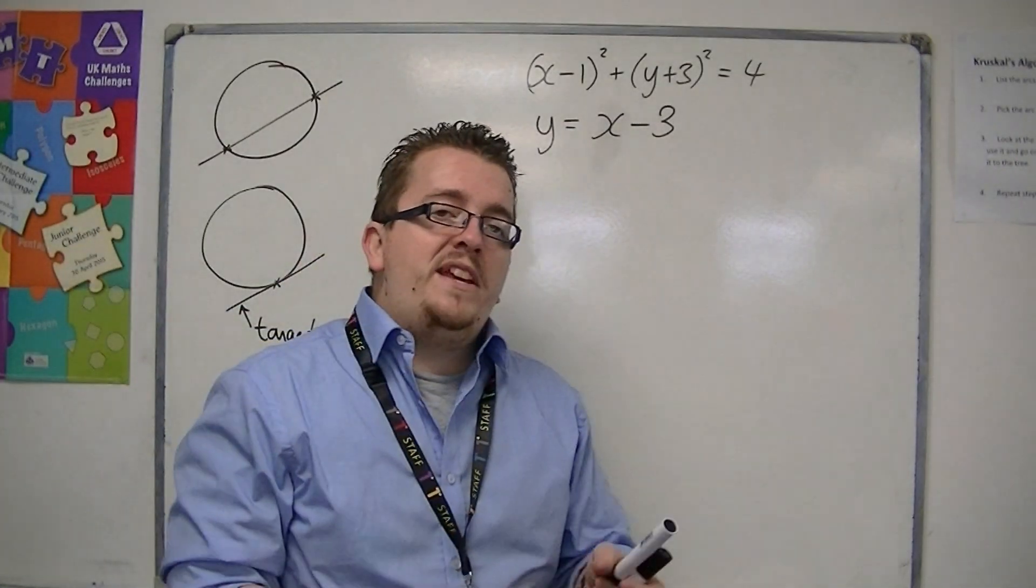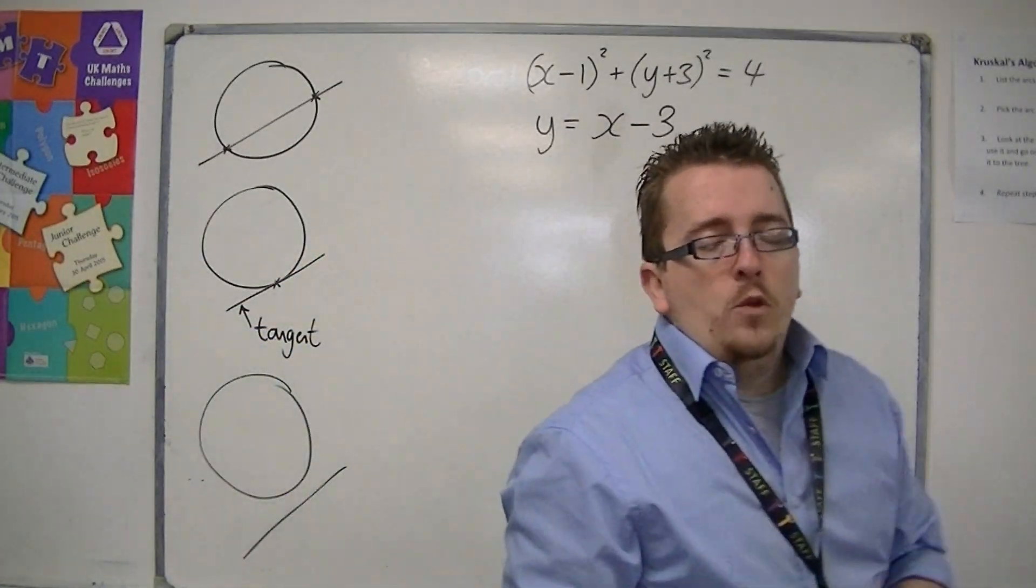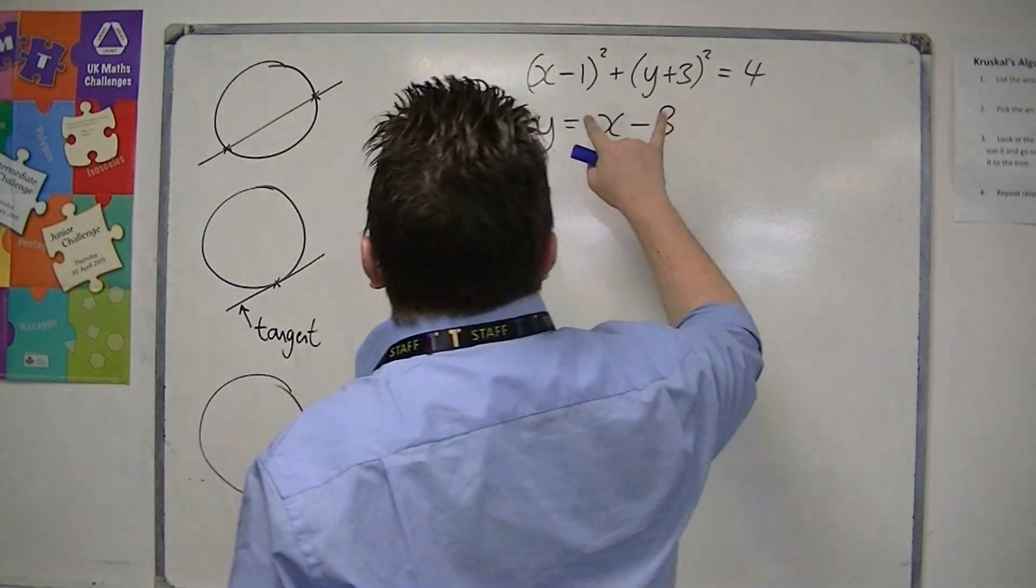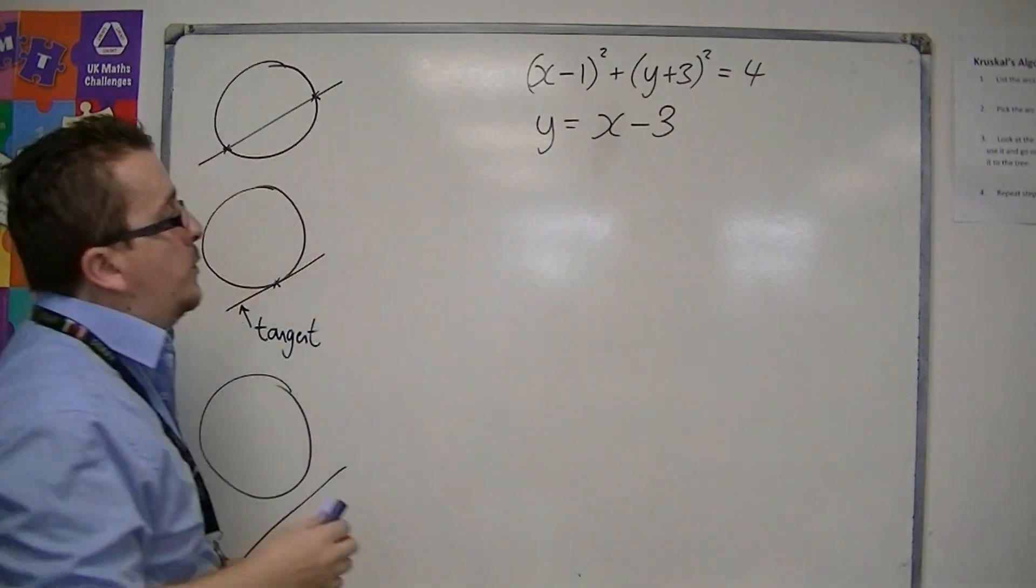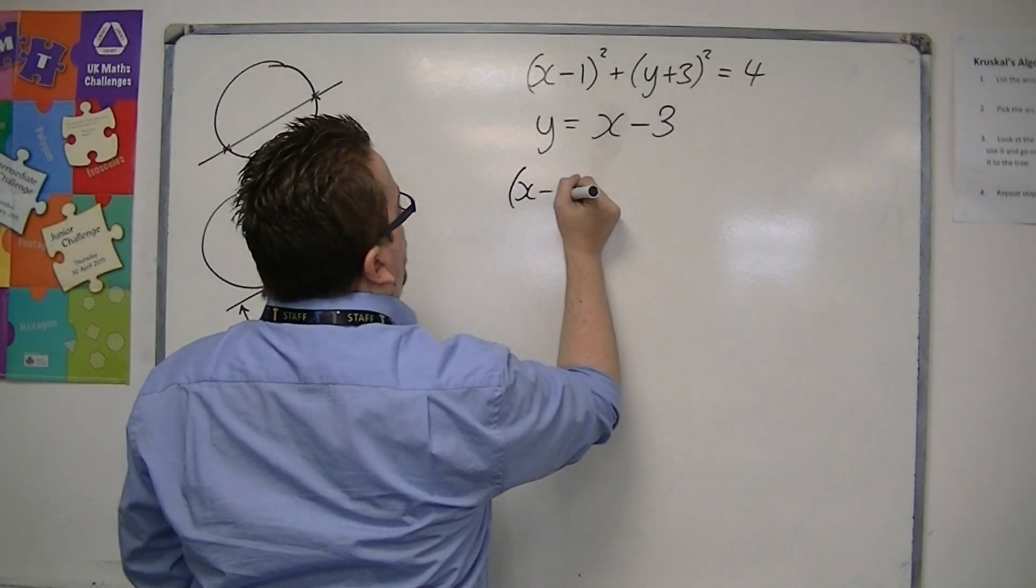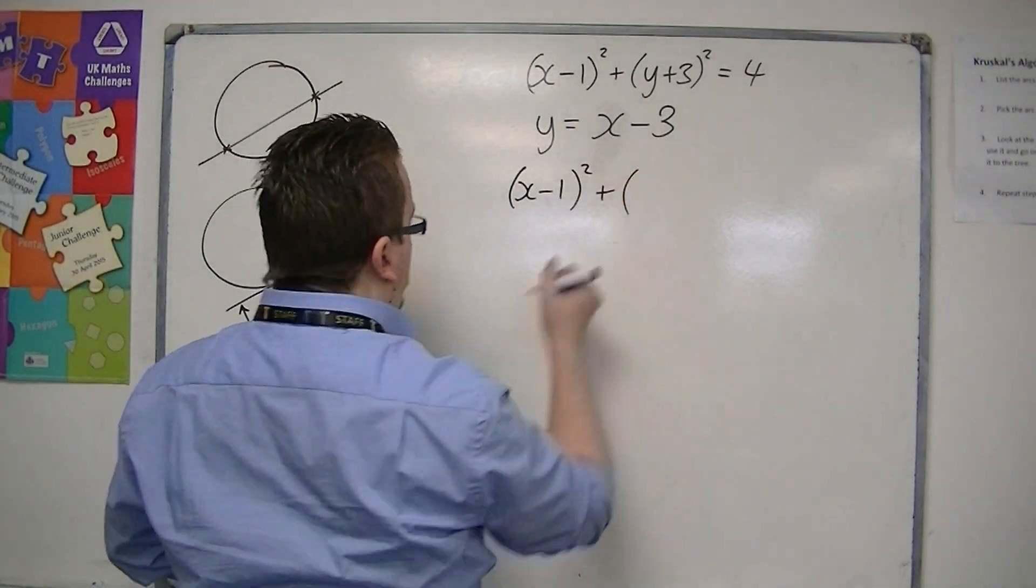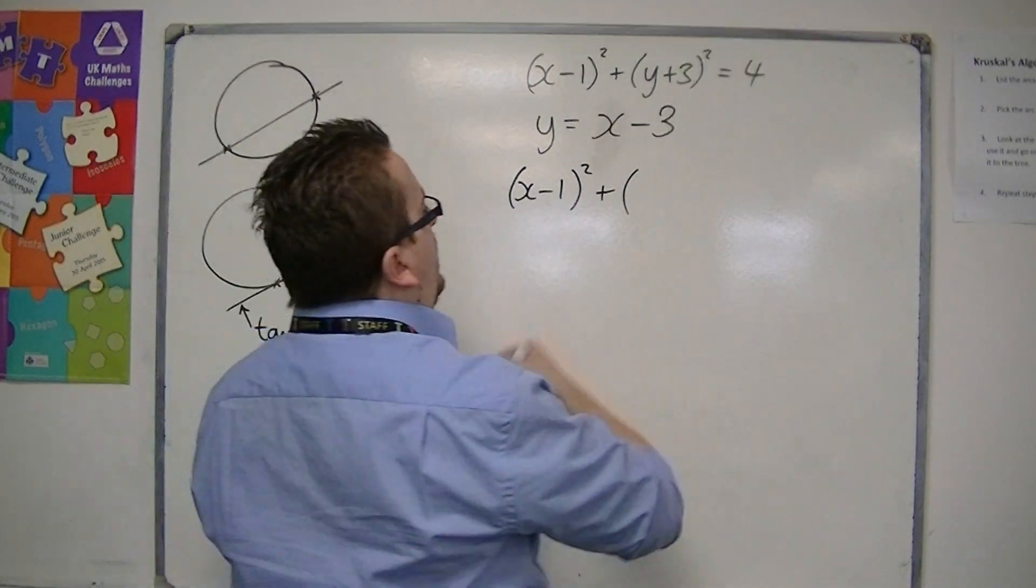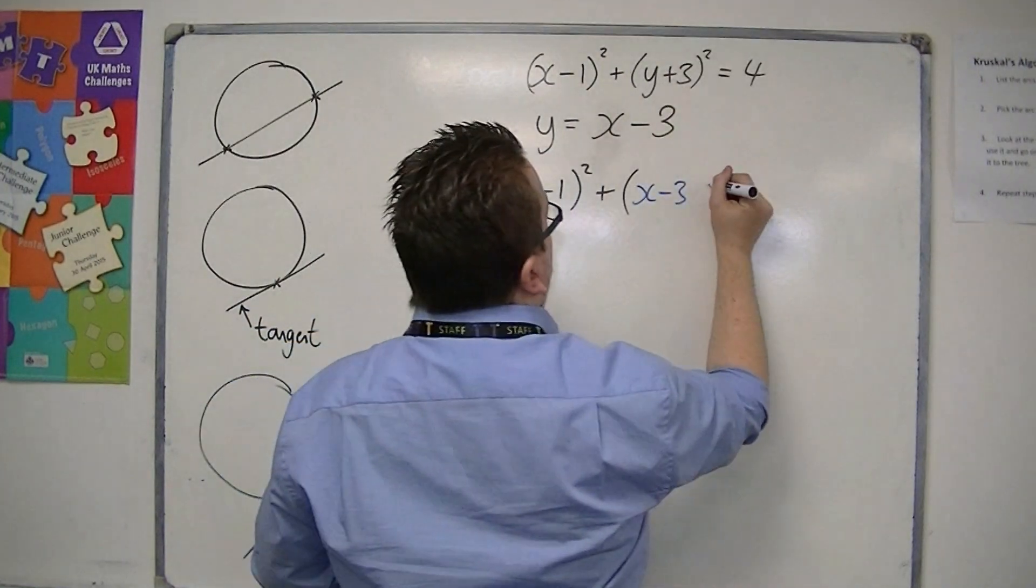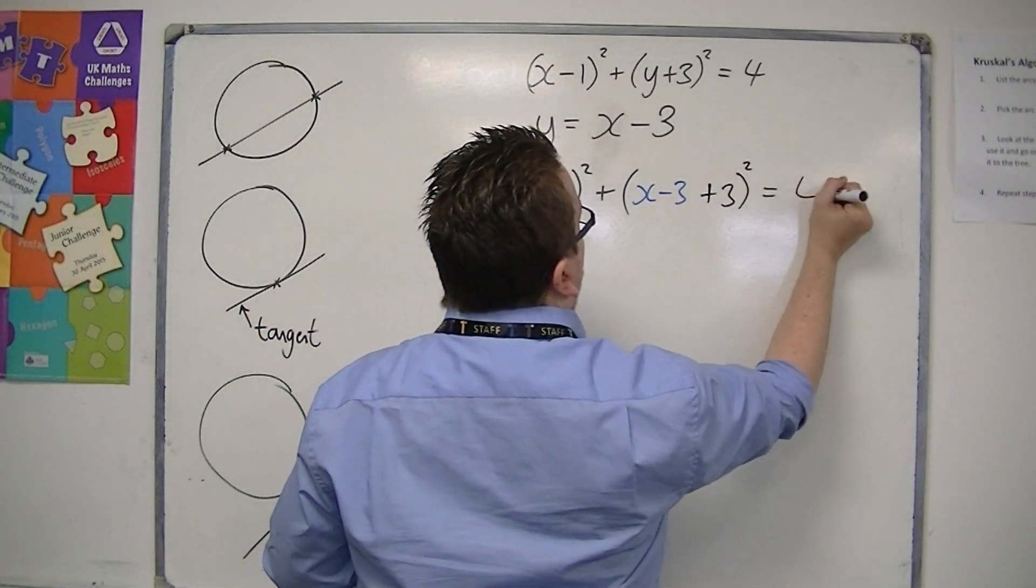So whenever we deal with intersections, we use simultaneous equations. And so we substitute this equation into the equation for the circle. So we would have x minus one squared plus y, which is x minus three, plus that three squared is equal to four.